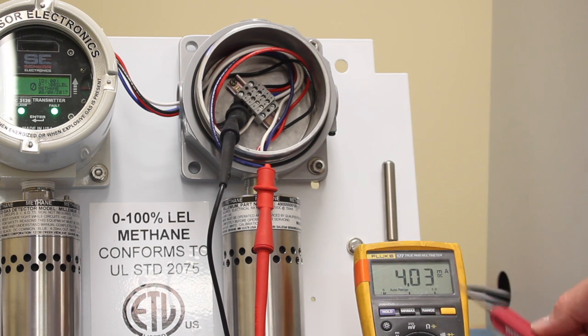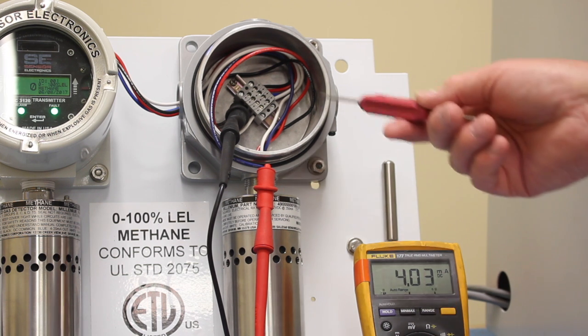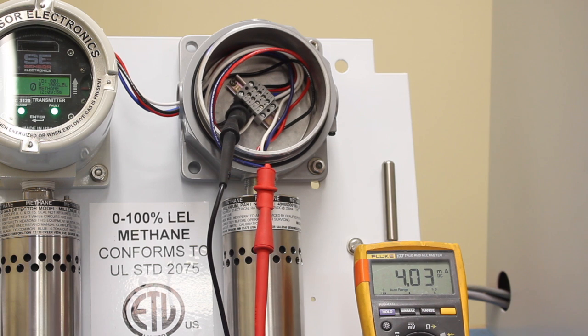Right now I've just got the current coming into the meter to demonstrate the calibration procedure. How you calibrate it without a transmitter is quite easy. The Millennium Sensor has four wires coming out of it.